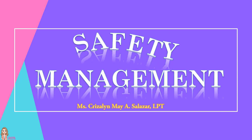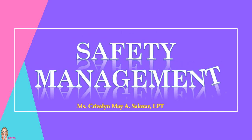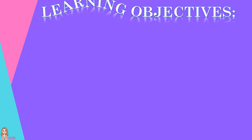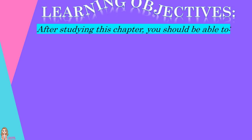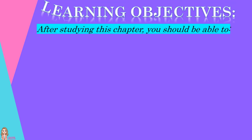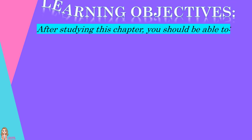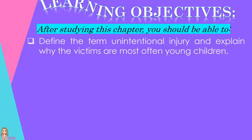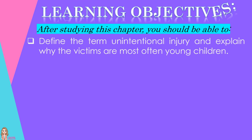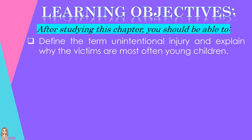Safety Management. Here are the following learning objectives. After studying this chapter, you should be able to define the term unintentional injury and explain why the victims are most often young children.